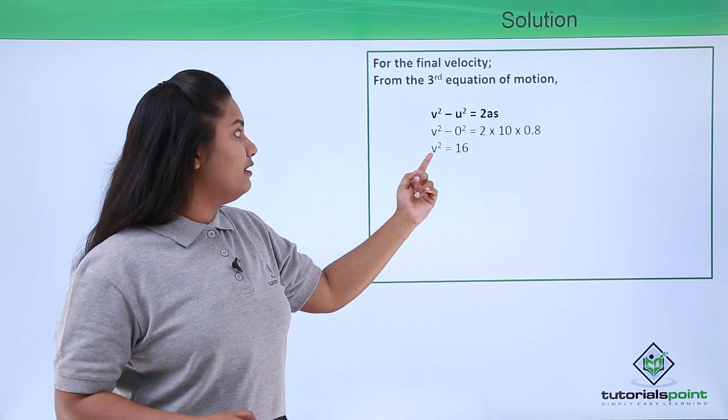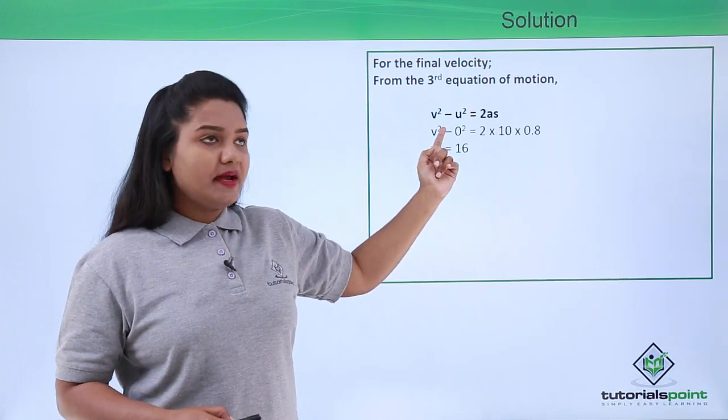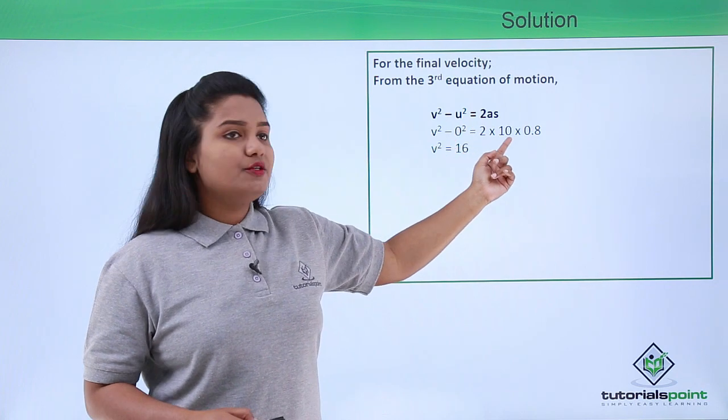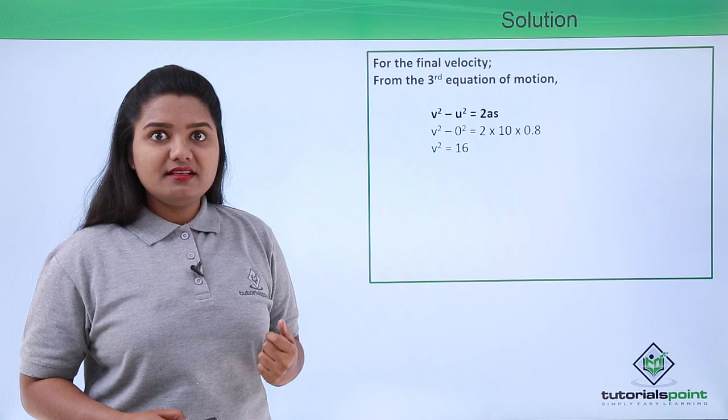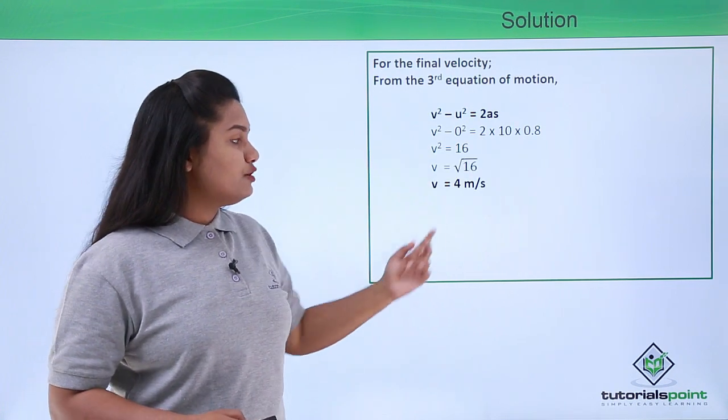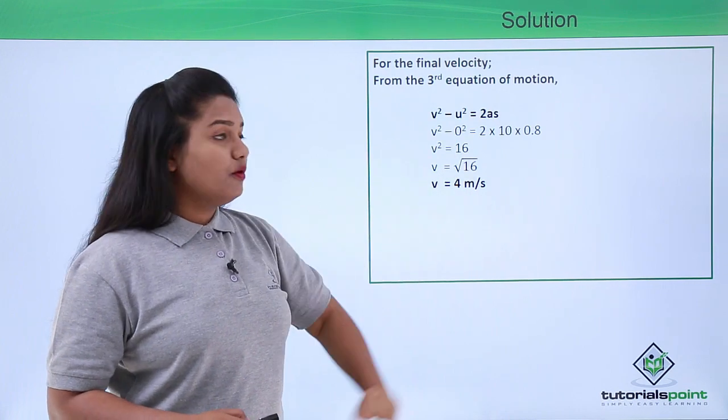On putting in these values, we have v² - 0² = 2 × 10 × 0.8. This yields v² = 16, and on taking the square root we get the velocity to be 4 meters per second.